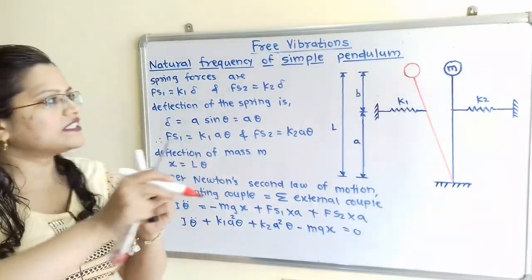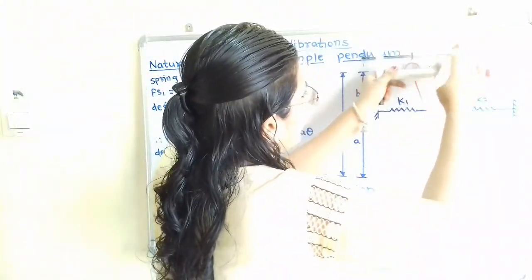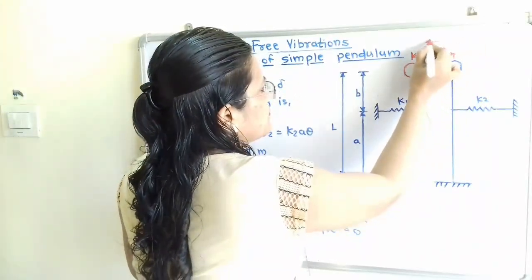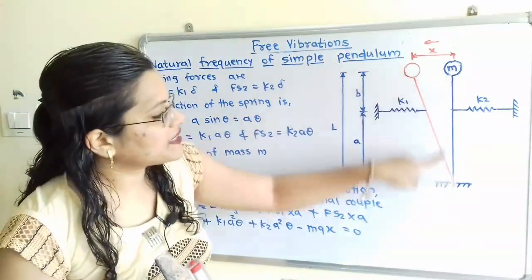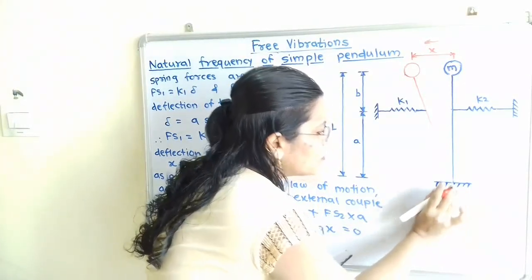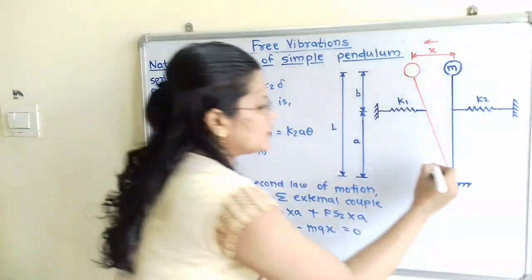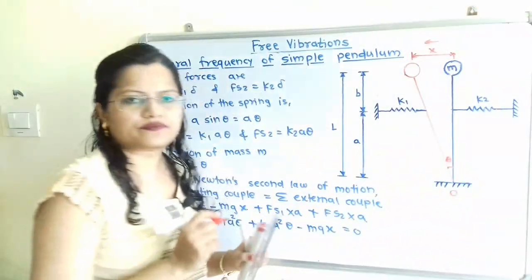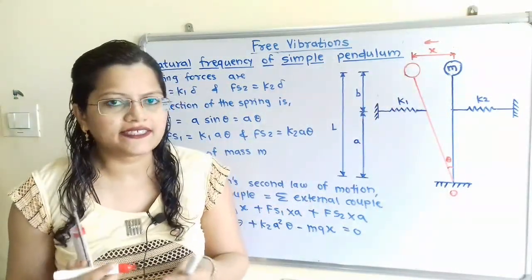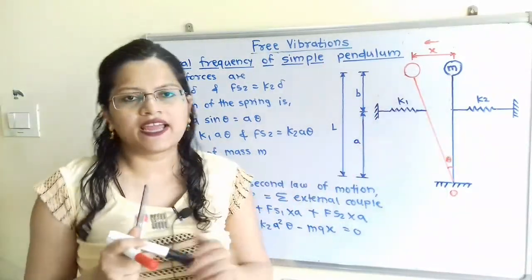We will show the displacement of mass M through a horizontal distance X in the left hand side direction. This mass M is fixed at its lower point O, so angular displacement is taking place about this fixed point. We will show this angular displacement as theta. Because of this horizontal displacement X we have to find out the spring force developed with stiffness K1 and K2.